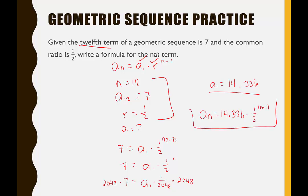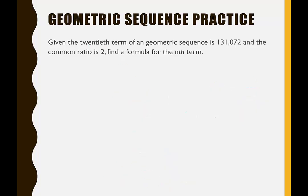We're ready to write the formula: a sub n equals 14,336 times (1/2) to the n minus 1. That's our formula for this example. In the last example, we're given the 20th term — read carefully, it says 20th — along with its value and the common ratio, and we need to write the formula.